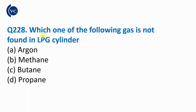Next question: which one of the following gases is not found in an LPG cylinder? LPG cylinder is used as fuel. The inert gas, noble gas, argon is not used in LPG. The right answer is argon — argon is not present. Methane, butane, and propane are used in LPG cylinders.